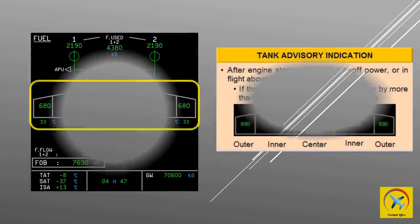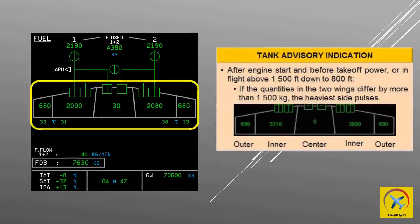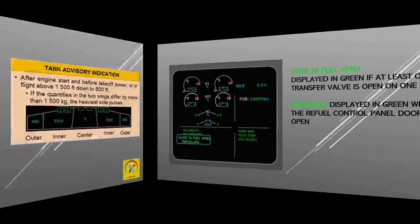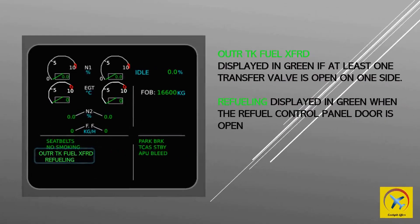Tank advisory indication shows after engine start and before take-off power, or in flight above 1500 feet down to 800 feet. If the quantities in the two wings differ by more than 1500 kilograms, the heaviest side pulses. Outer tank fuel transferred is displayed in green if at least one transfer valve is open on one side.